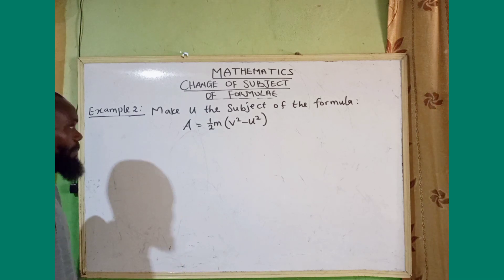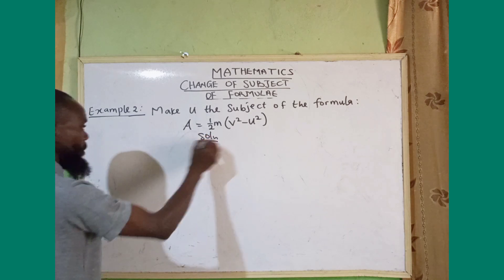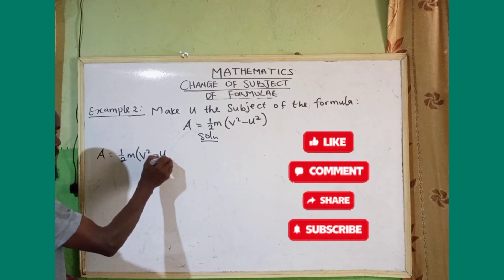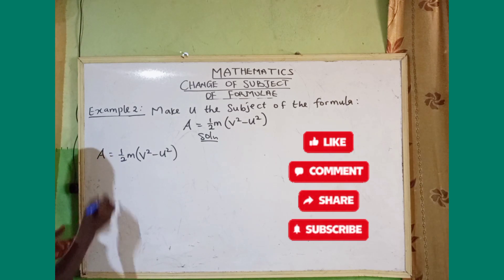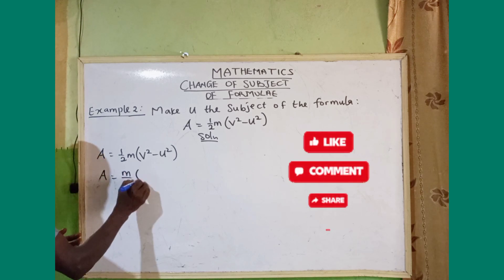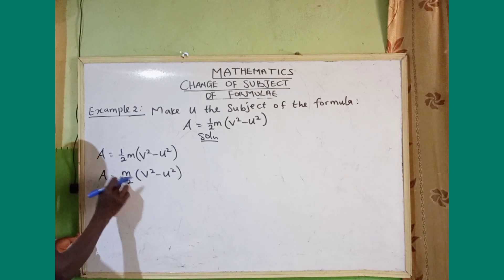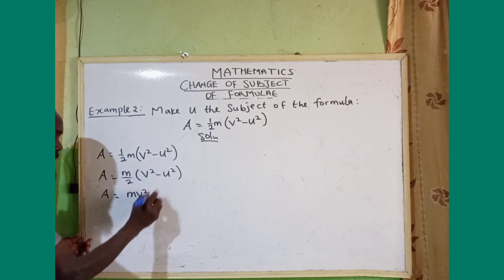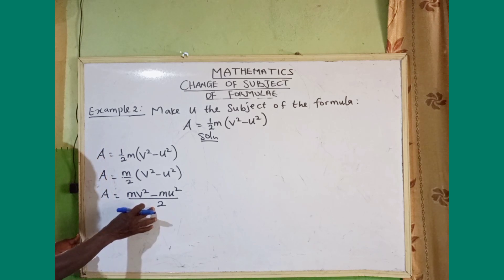Example two: make u the subject of the formula. We have a equals one over two m, open bracket, v squared minus u squared. Expanding, this gives m times v squared minus m times u squared, all divided by two. So the denominator is two and we write a over one.